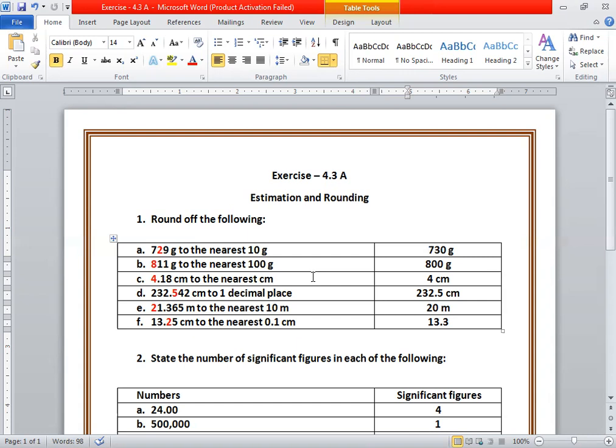Then we have 232.542 cm to 1 decimal place. The 1 decimal place is 5, and beside 5 we have 42, which is less than 50, so we can neglect it. The answer is 232.5 cm.